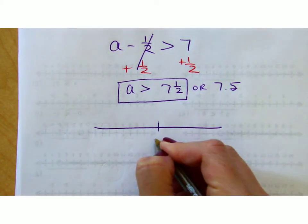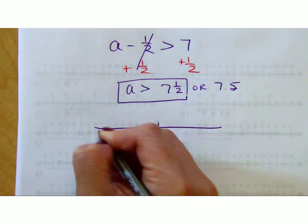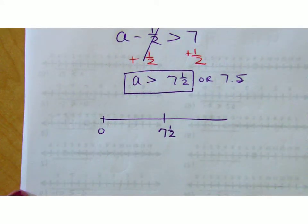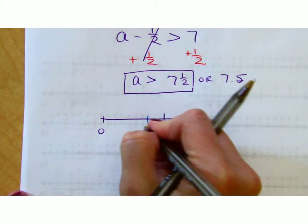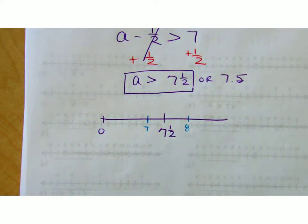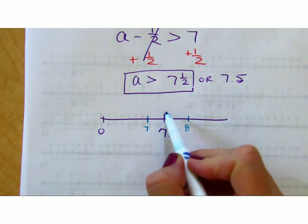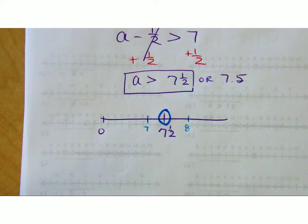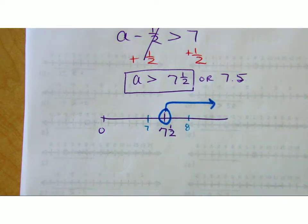If this is 7 and a half, zero is over here. 7 is to the left of it. 8 is to the right of it. It has to be greater than 7 and a half. It can't actually be 7 and a half. It's got to go this way. I'm going fast because this should be like a quick type of review.